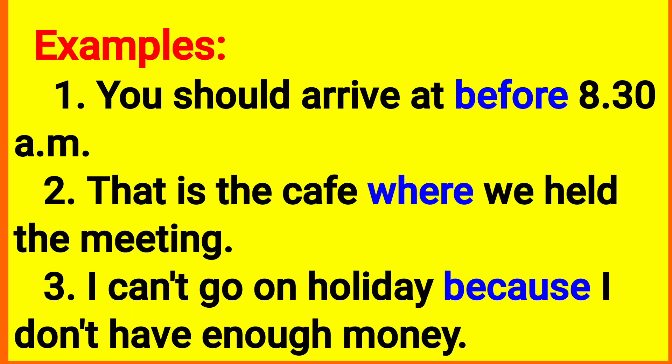So, noun answers what, adjective answers what kind, and adverb answers when, where, or why. The adverb clause can show time, place, or reason. Third example: 'I can't go on a holiday because I don't have enough money.' 'Because I don't have enough money' gives the reason — it answers why. That is an adverb clause of reason.